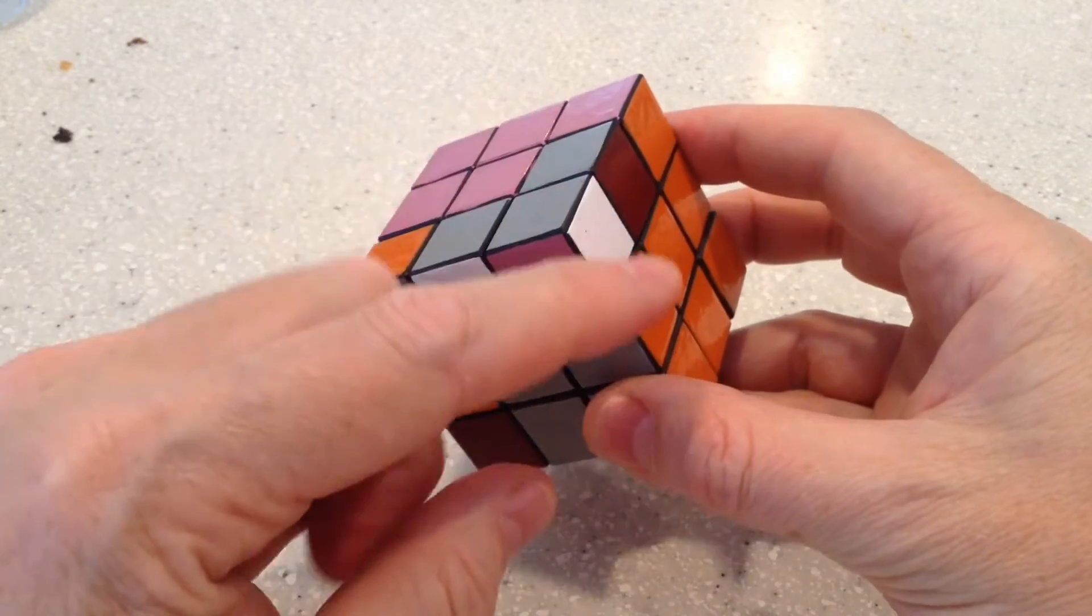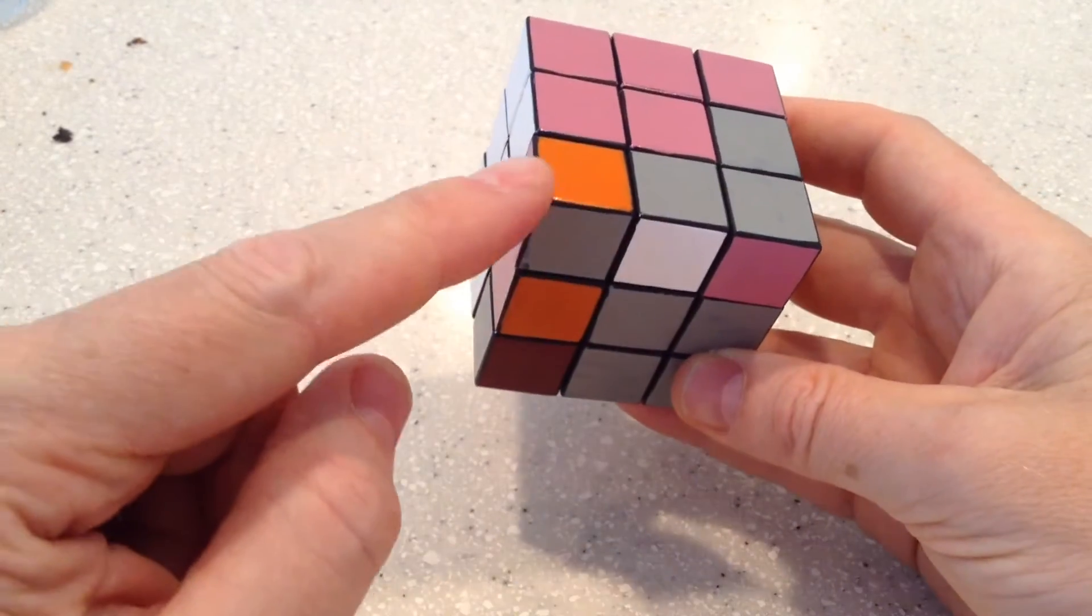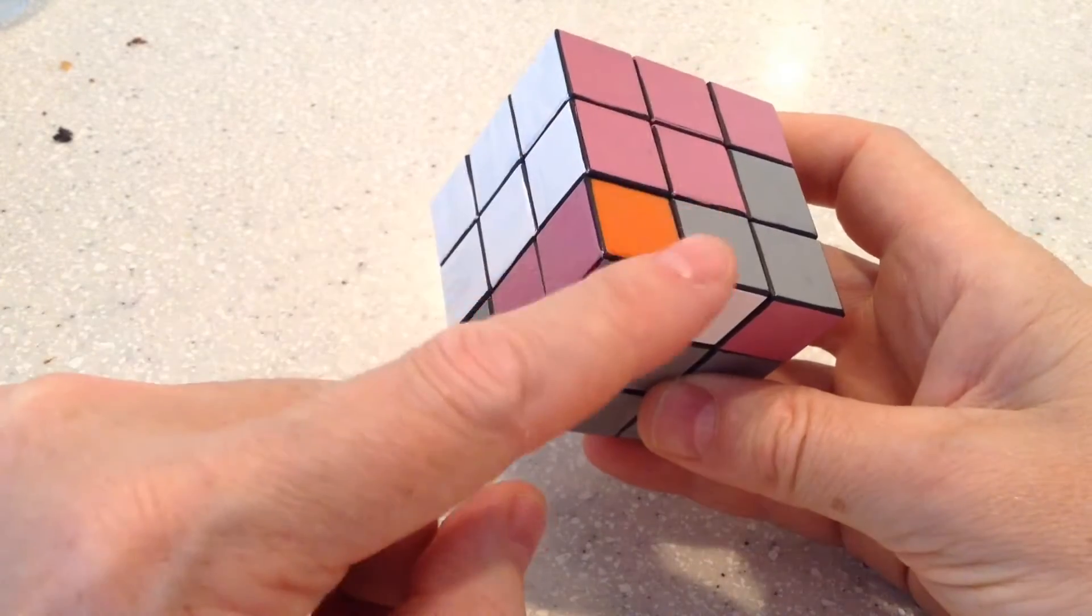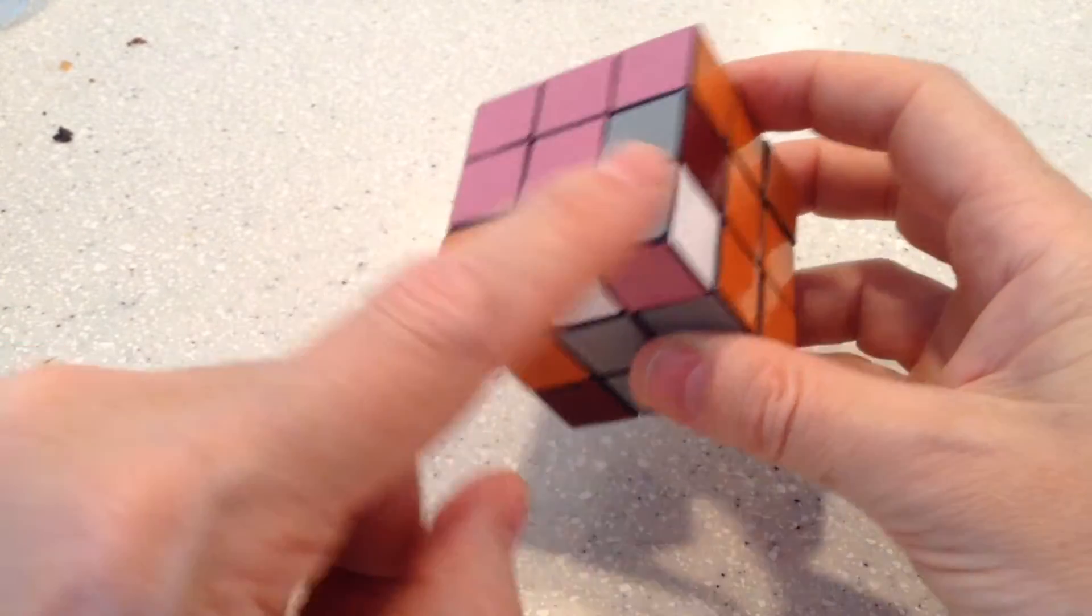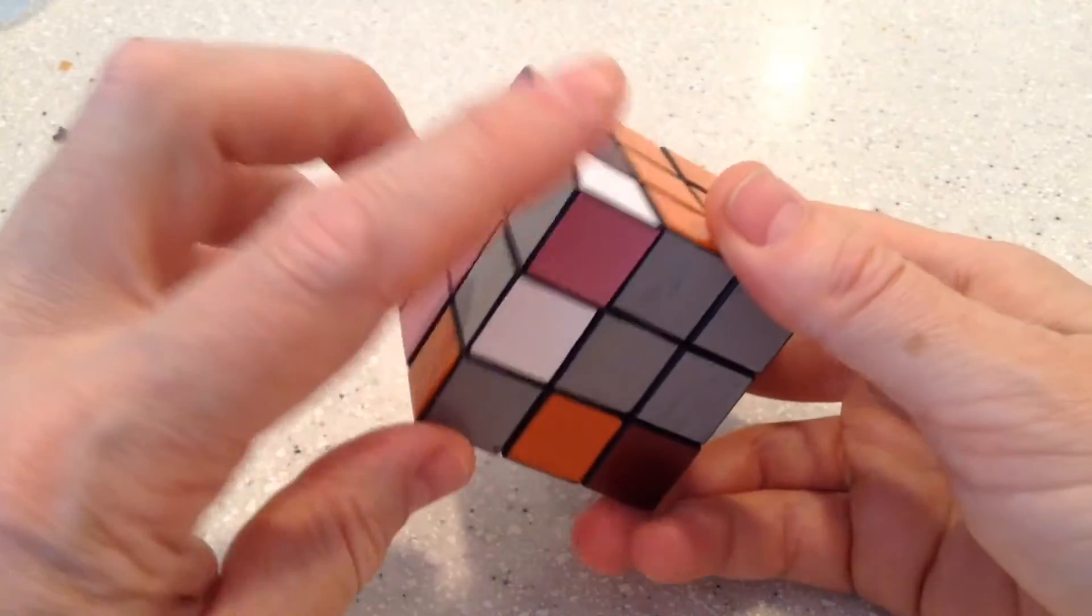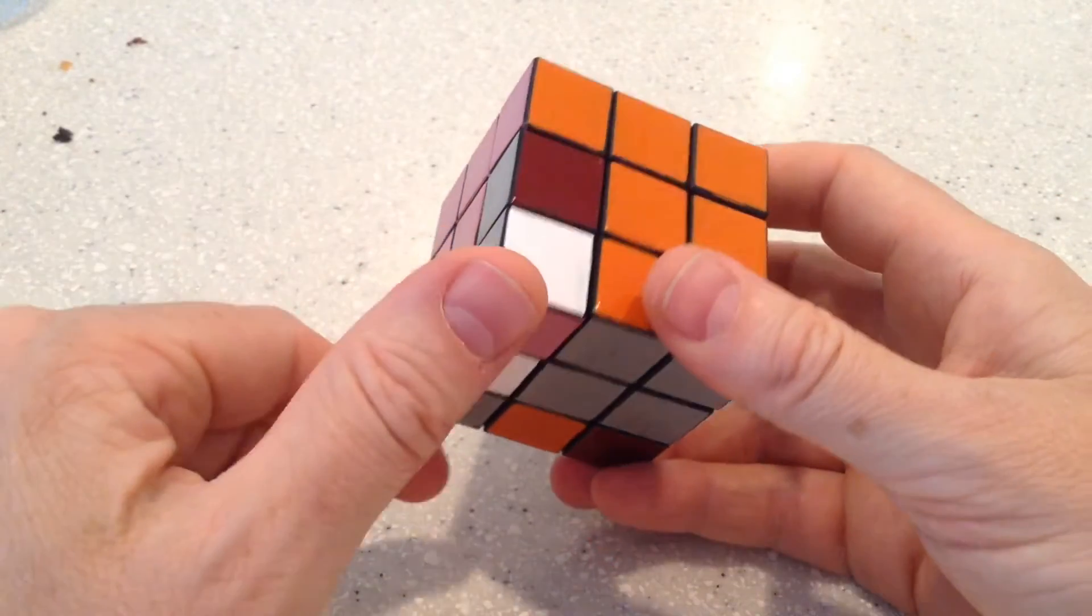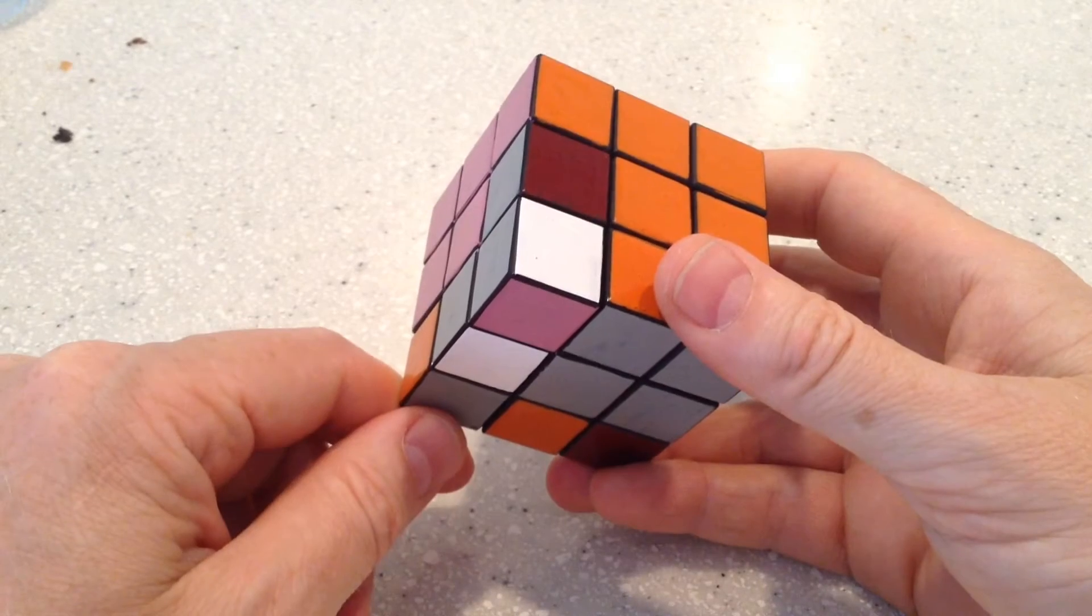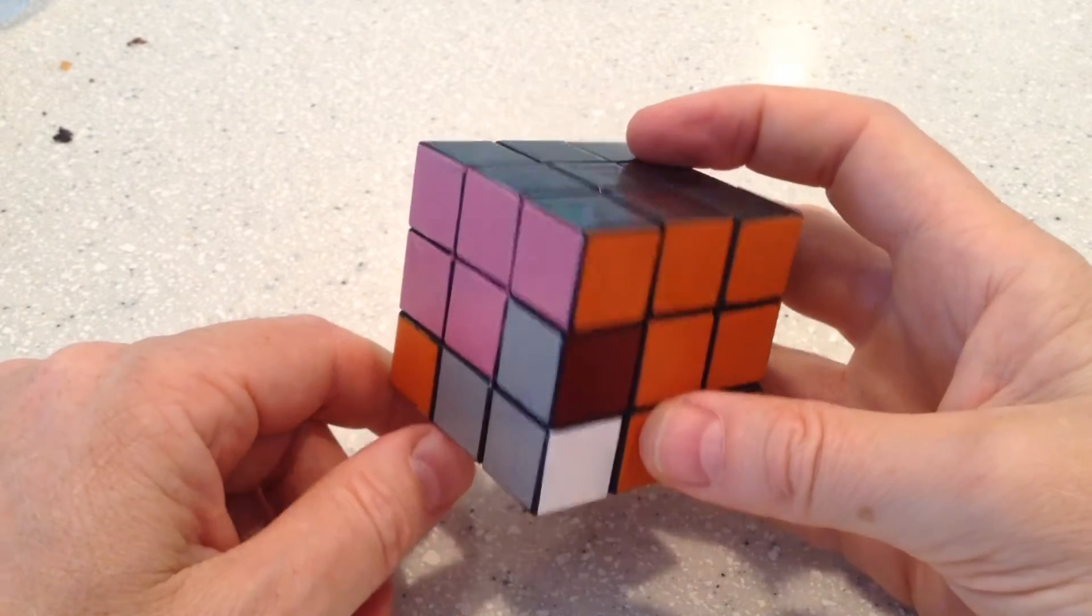So, there is the pink, grey, white, which belongs here, and there is pink, orange, and grey, which belongs here. So, that combination of moves can be used to swap two corner pieces on the bottom layer.